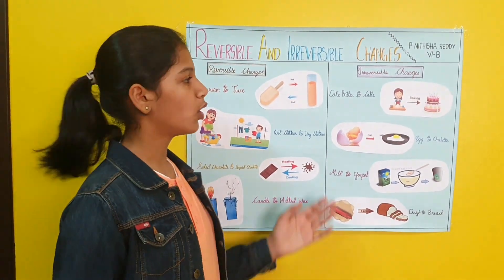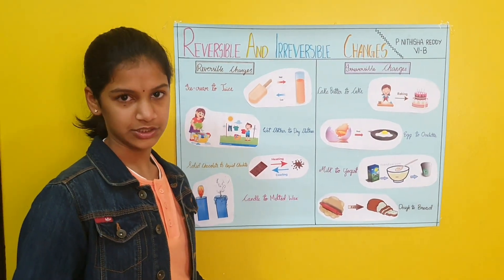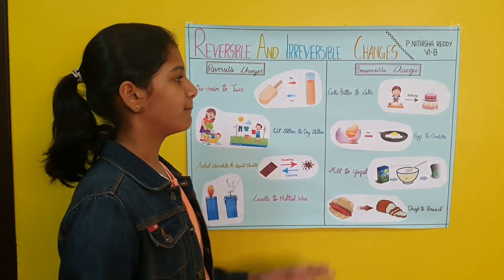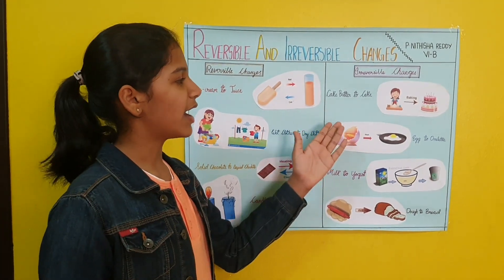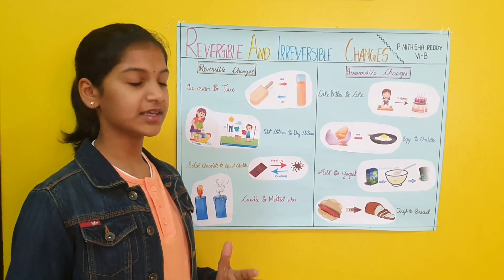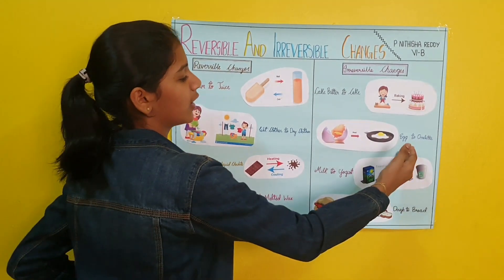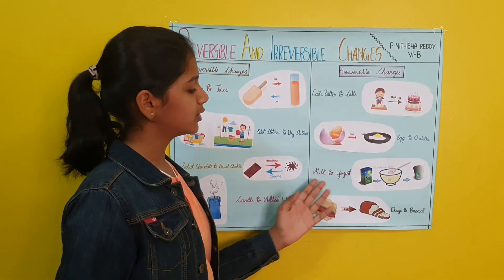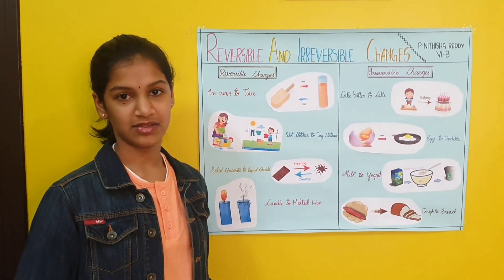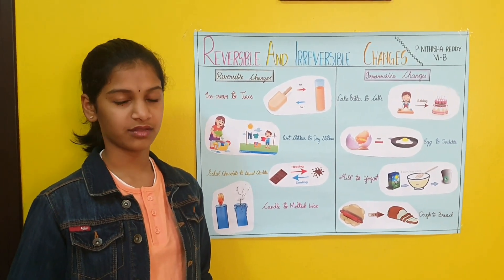So let us see what are irreversible changes. Irreversible changes are the changes which cannot be reversed. For example, cake batter to cake — we can make cake from cake batter but then we cannot again make cake batter from cake. Egg to omelette. Milk to yogurt and dough to bread. I hope you all understood what are reversible and irreversible changes.